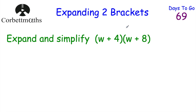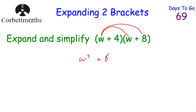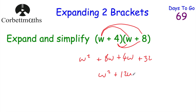So we've got (w + 4) lots of (w + 8). To work this out, I'm going to do w lots of (w + 8) and then four lots of (w + 8) and then add them all up. So w times w would be w squared, and w times eight would be 8w. Now doing four lots of (w + 8): four times w would be plus 4w and four times eight would be plus 32. So we've expanded our brackets. Now we can simplify — we've got 8w and 4w, which add together to give w² + 12w + 32.